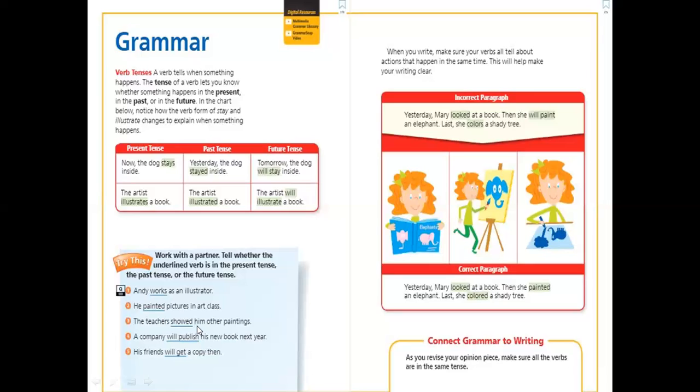A company will publish his new book next year. So will publish, will plus infinitive, indicates yes, future, future tense. His friends will get a copy then. Will get here is also future.